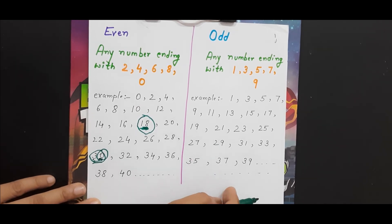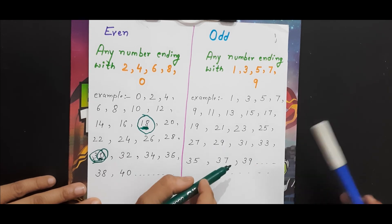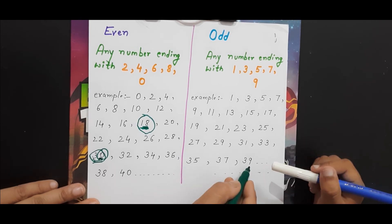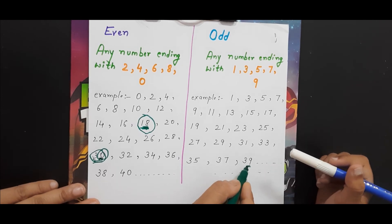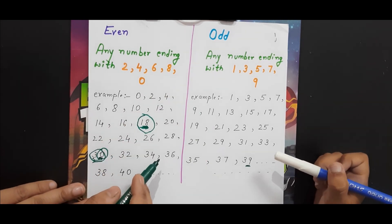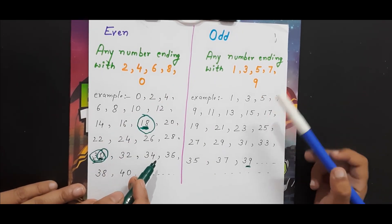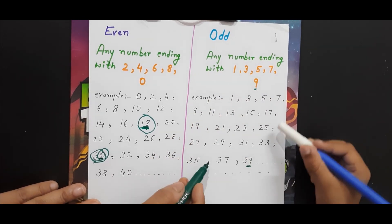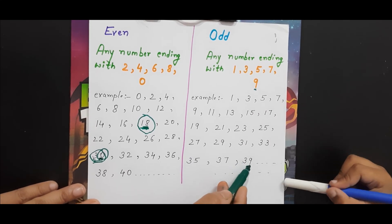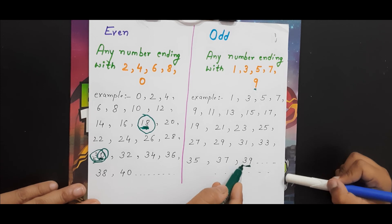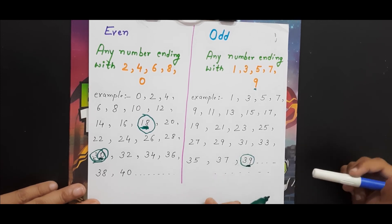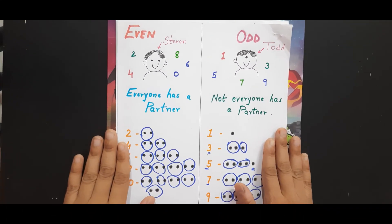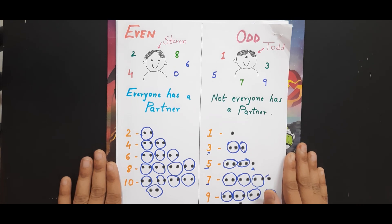Now let's take a bigger odd number. Let's take 39 — which is the ending number in 39? Nine. Is nine an even number or odd number? Can you see? Nine comes under odd — one, three, five, seven, nine, right? So if nine is the ending number in 39, then the whole number 39 is an odd number. Yes, it's an odd number!